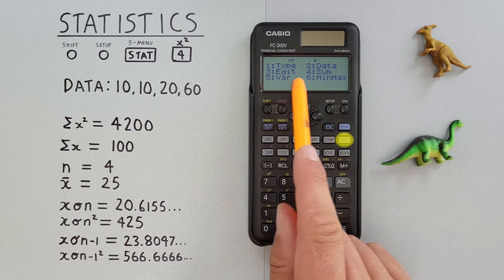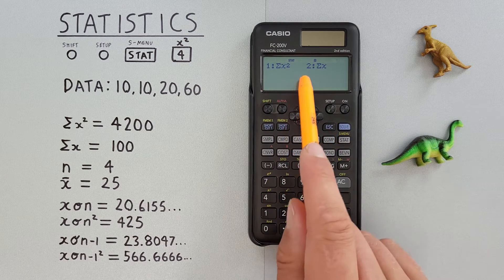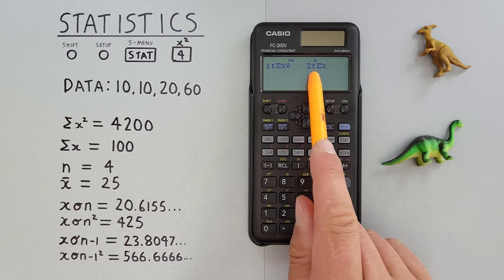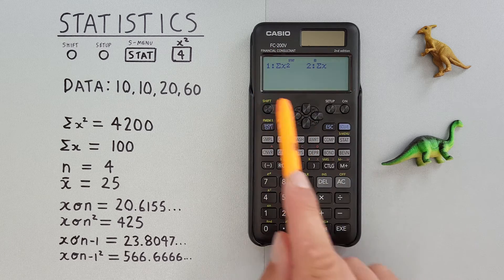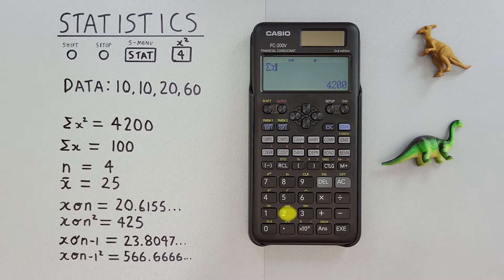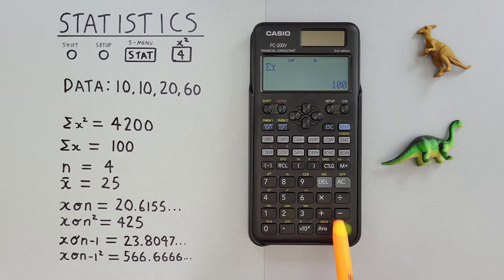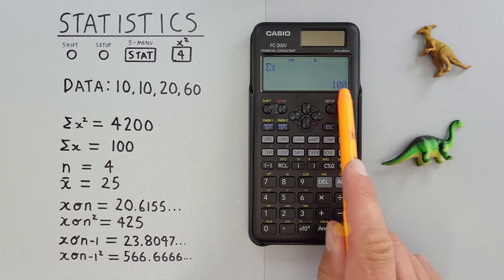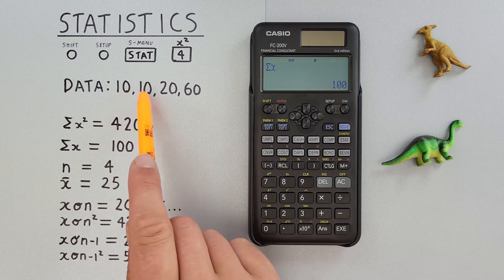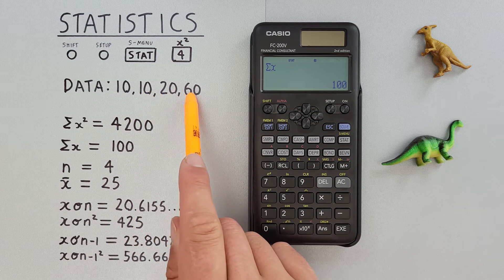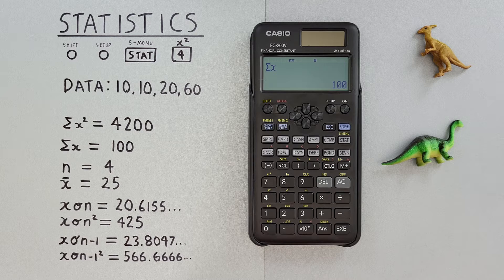Go back to our menu. And we can also choose number two, sum, which will be the sum of all our data entered. And we see that gives us Σx = 100, which 10 plus 10 plus 20 plus 60 equals 100, which makes sense.